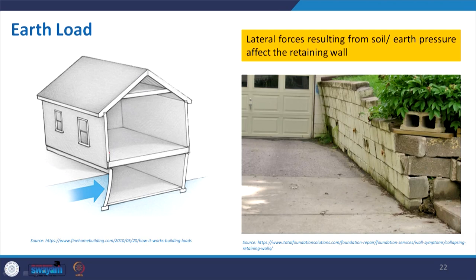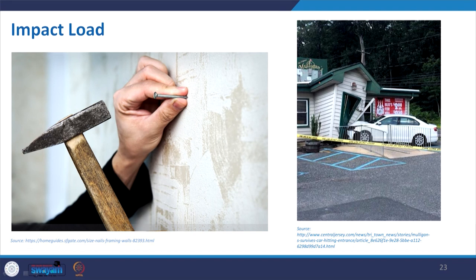Earth load is basically lateral forces resulting from soil or earth pressure that may sometimes cause damage. You can see a retaining wall or boundary wall where the earth is creating pressure on it and it is not in a safe condition. Impact load: nailing a wall with a hammer or a car hitting a building all of a sudden creates impact. If your building is weak, even putting a nail can damage the building and disturb the equilibrium of the structure.